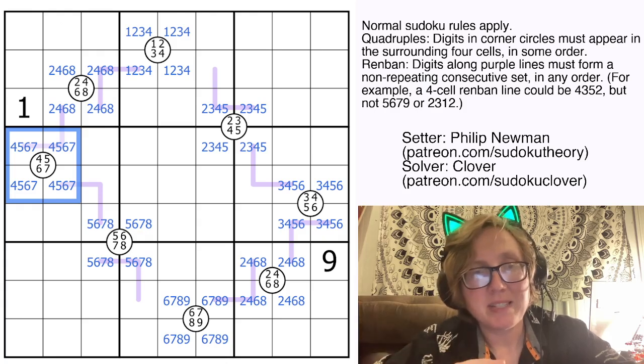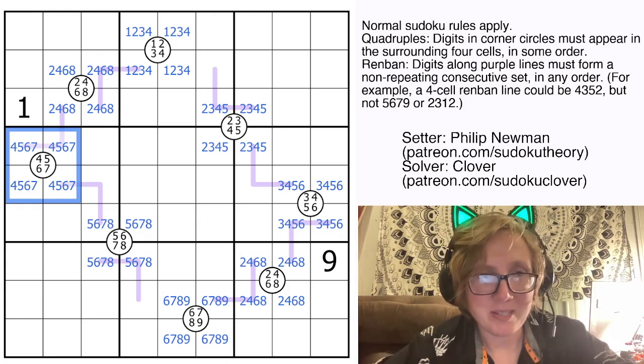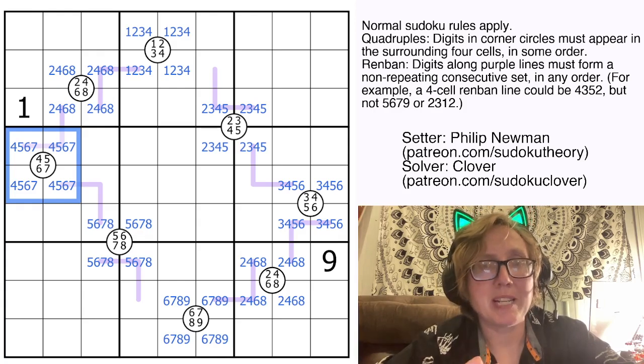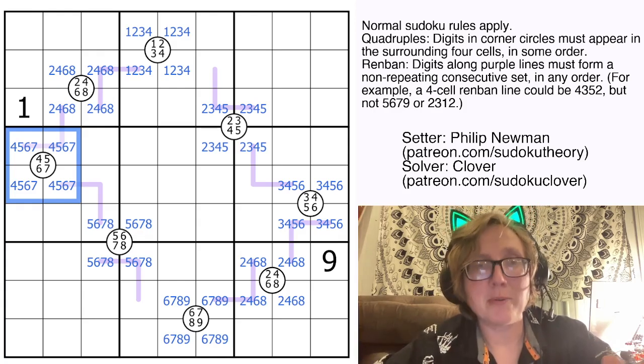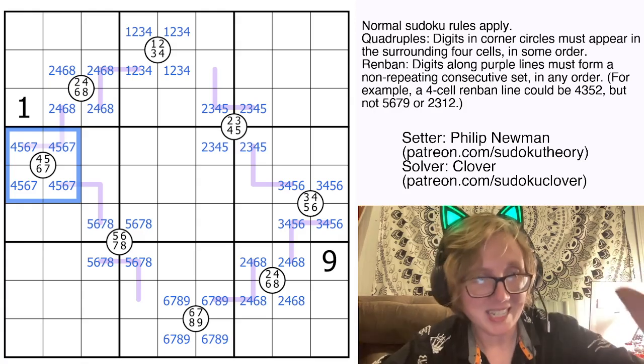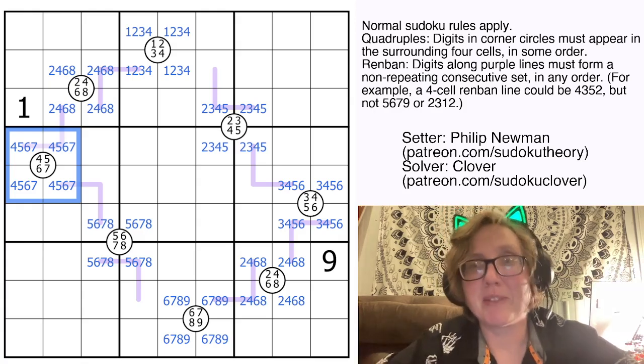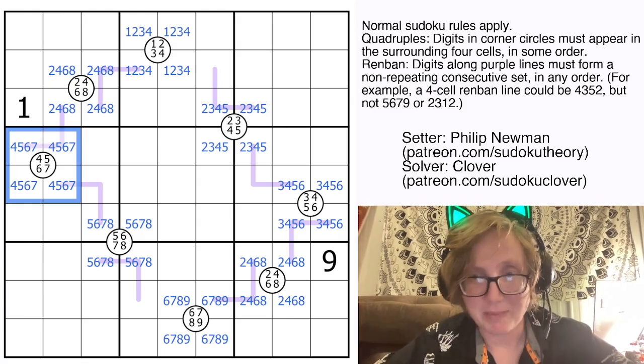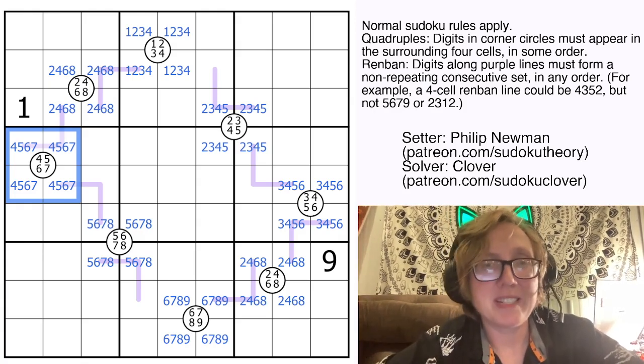I wouldn't necessarily do things like this on paper. In fact, I definitely wouldn't do this on paper. And I also probably would not approach a puzzle this way if the quadruples weren't complete. So if, for instance, some of them only had 3 clued digits in them instead of all 4, or anything along those lines.